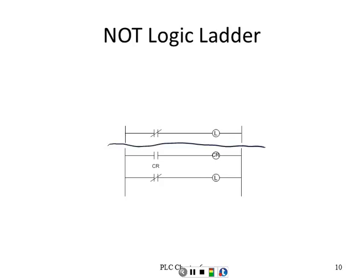The second rung shows you doing the same thing only using a control relay — you hit a button to turn on a control relay, which then turns off the light. You might use this when your inverter is on a long line of instructions. You may have 12 inputs, and at the end you need to invert them, so sometimes it's easier to use the control relay inverted.